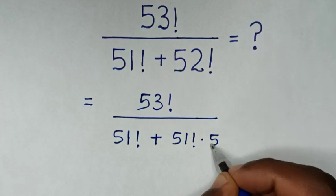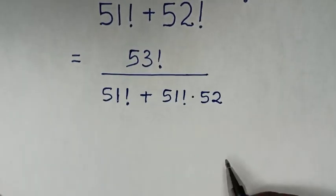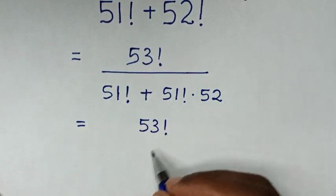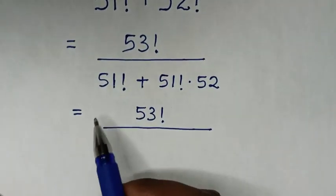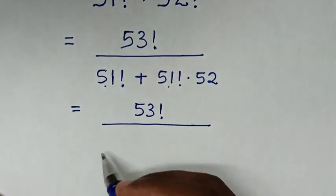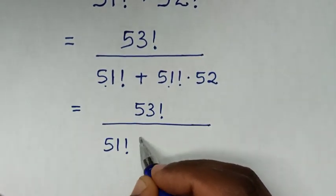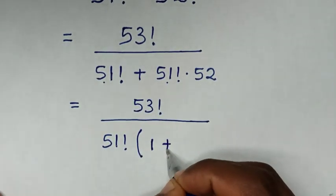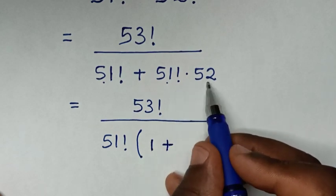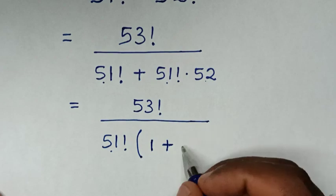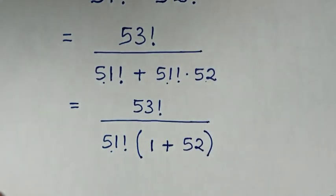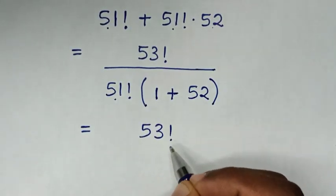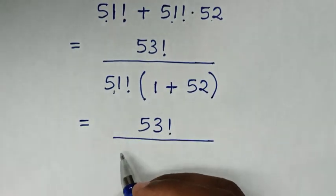So the expression becomes 53 factorial over the denominator where 51 factorial is common. Taking 51 factorial out of the bracket: 51 factorial divided by 51 factorial is 1, and 51 factorial times 52 divided by 51 factorial is 52. So the bracket gives 1 plus 52, which equals 53 factorial over 51 factorial times 53.